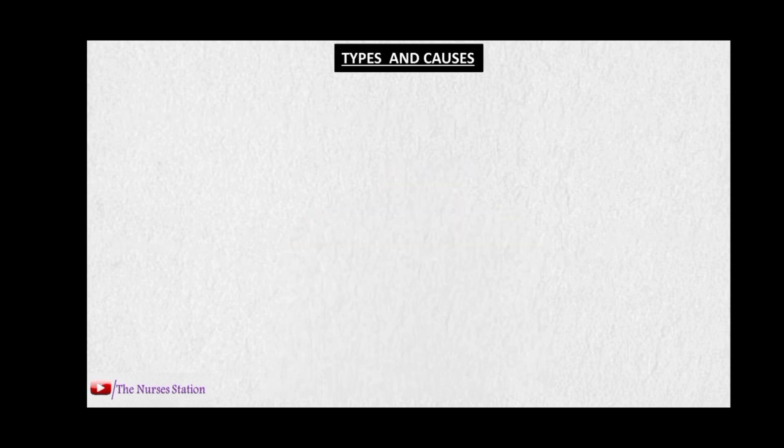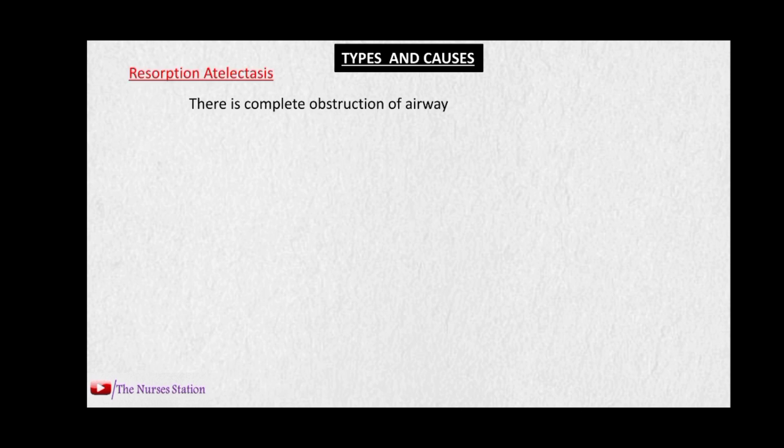The types of atelectasis and their respective causes. The first type is resorption atelectasis. In resorption atelectasis there is complete obstruction of the airways. Remember, there should be complete obstruction of the airway in order to produce atelectasis. Partial obstruction cannot produce atelectasis because during inhalation, when the lung is expanding, the partially obstructed airway opens more widely, allowing passage of air. But during exhalation, when the lung is getting smaller, the partially obstructed airway closes suddenly or becomes very narrow and air is trapped inside the airways — it does not produce atelectasis.